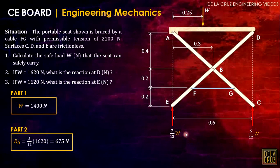For part three, if W is the same, what is the reaction of E? Of course, that is 7 over 12 of W, and W is 1620 newtons. So we have 945 newtons for part three. Actually, we can derive a formula because we can create a relationship between W and the tension.